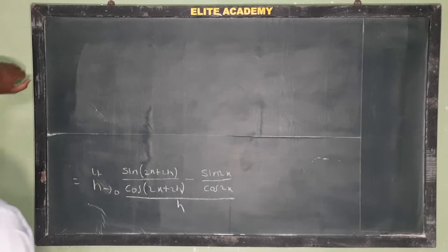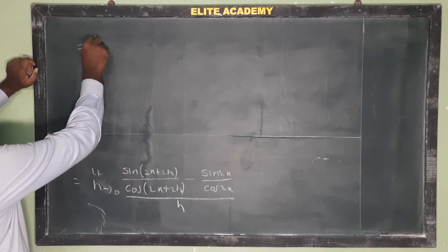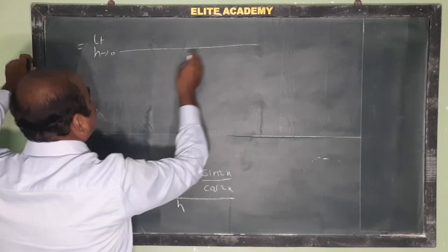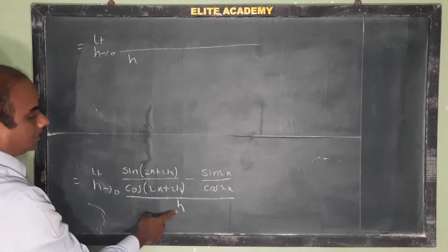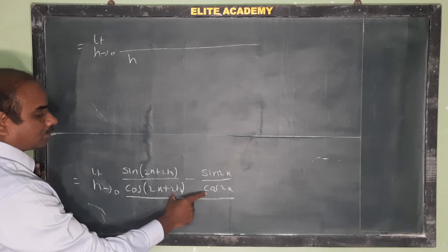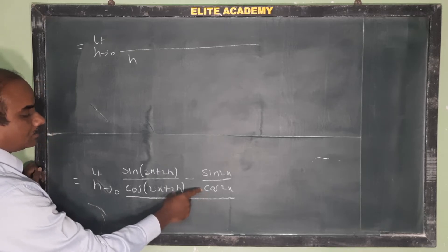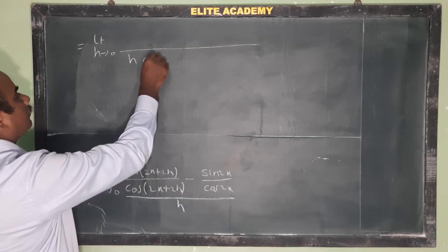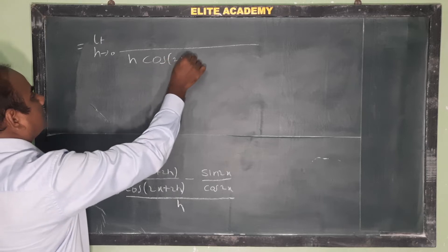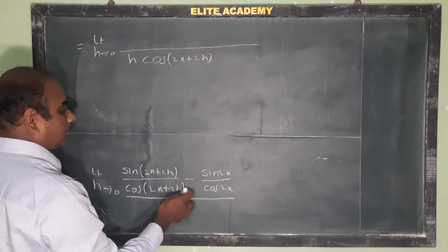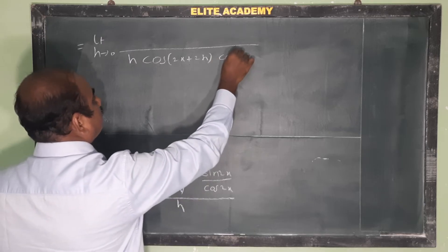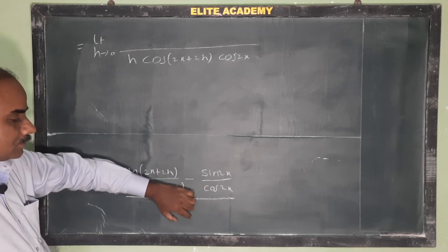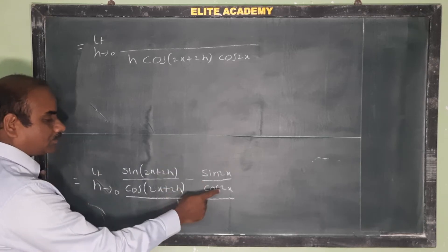Now take LCM here. So limit h tends to 0 by h, it is already in the denominator. In the numerator, after taking LCM and multiplying, these two go to the denominator. So this becomes h into cos(2x plus 2h) into cos 2x.